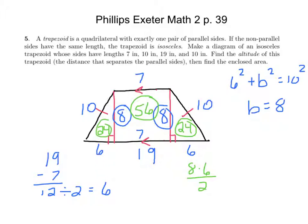So our enclosed area would be, let's see, that'd be 48 plus 56, which is 104. And that would be square inches. Questions on that one?